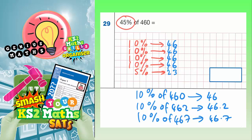We've got our 10%s — all 46s — and we've got our 5% is 23. So all we've got to do now is find the total of these, because if we add it all together, we'll get 45%.